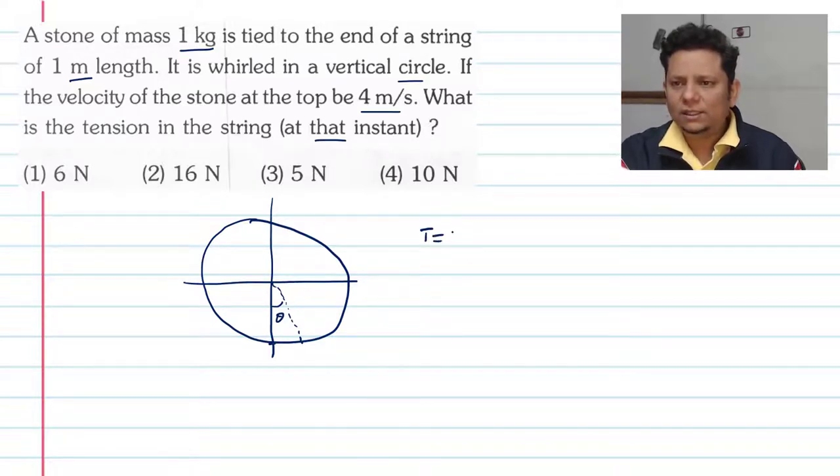In general, we have tension of the value of m v square by r plus m g cos theta.